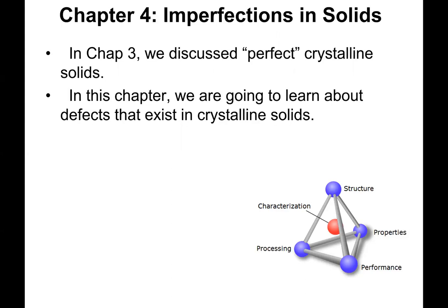Alright, in chapter three, we discussed the crystalline solids, the regular arrangement and packing of atoms into a crystal structure. And when we spoke of this, we didn't speak about defects yet. So what we're going to do now is consider the types of defects or imperfections that would exist in crystalline solids.